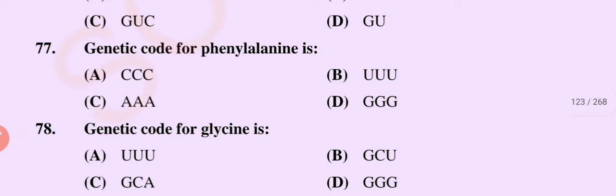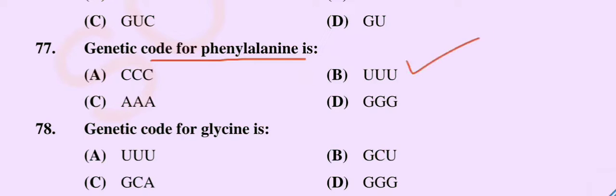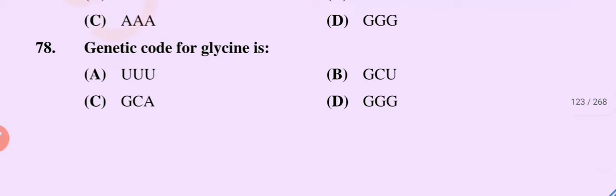Question number 77. The genetic code for phenylalanine is: option A, CCC; option B, UUU; option C, AAA; option D, GGG. The correct option is option B. UUU is the genetic code for phenylalanine.